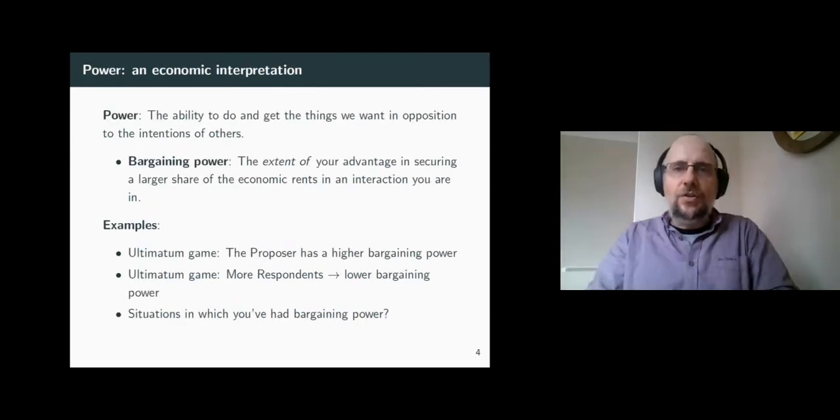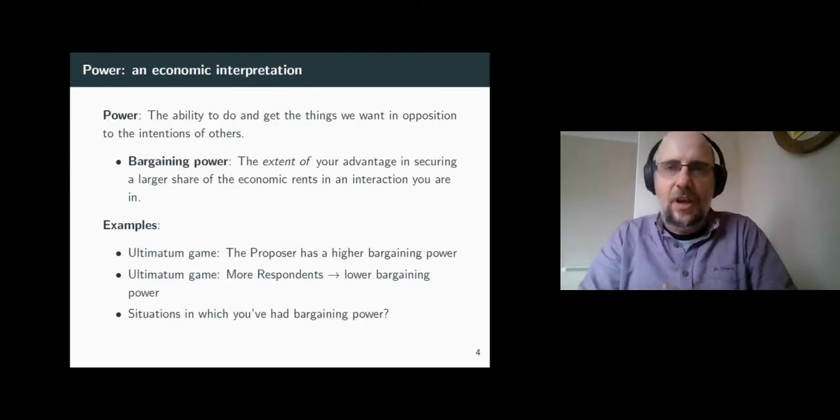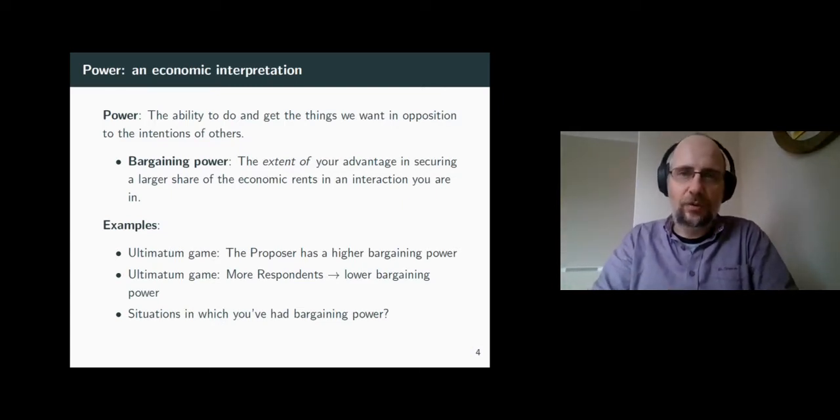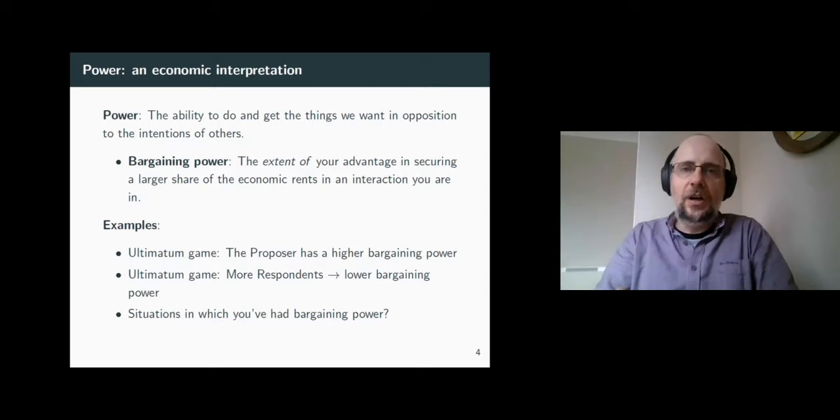Institutions shape the constraints agents face, but notice that those constraints can be different for the various parties involved. For example, if you are renting an apartment, you cannot sell it, but the owner can.